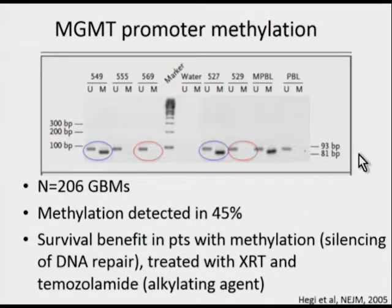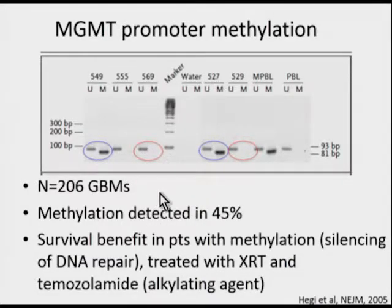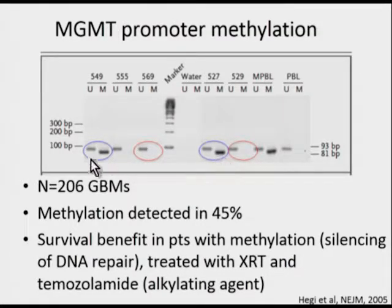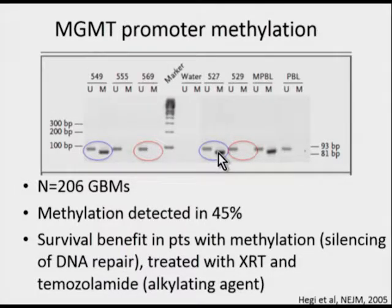For high-grade gliomas, looking at MGMT promoter methylation: this is the original study published in 2005, now a routine test. Each lane represents an individual glioma; peripheral blood lymphocytes serve as an unmethylated control, and methylated lymphocytes serve as a positive control. Among these tumors, some show methylation of the promoter and others do not. Among those with methylation, this indicates silencing of DNA repair, making tumors susceptible to alkylating agents and predicting response to chemotherapy.